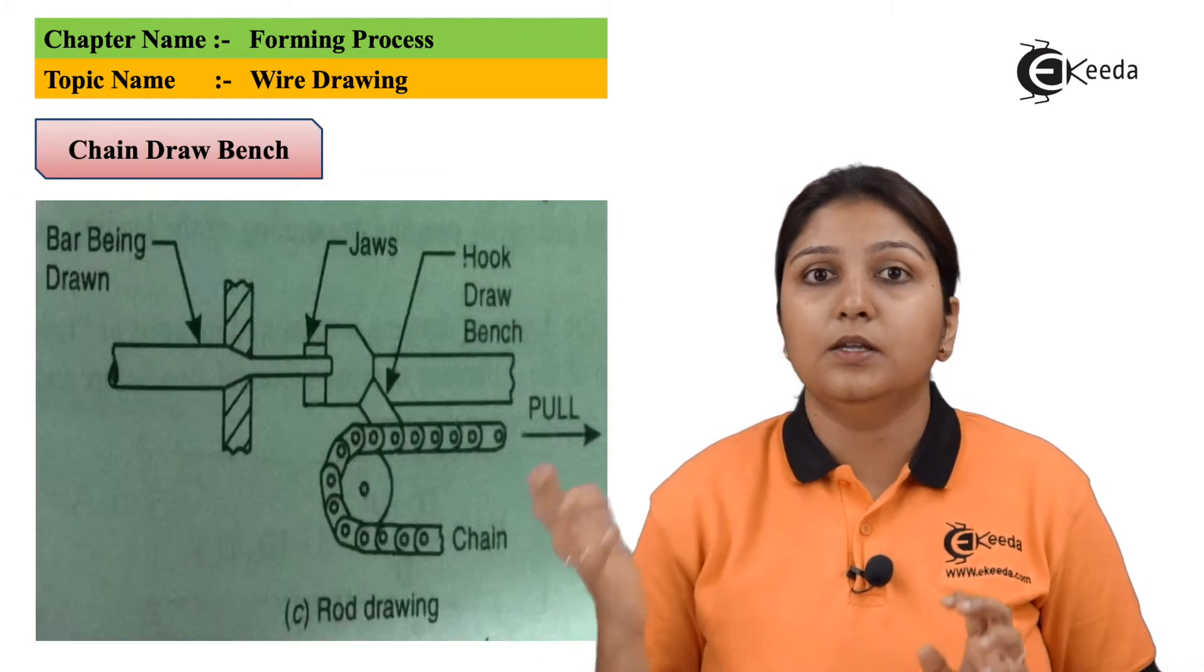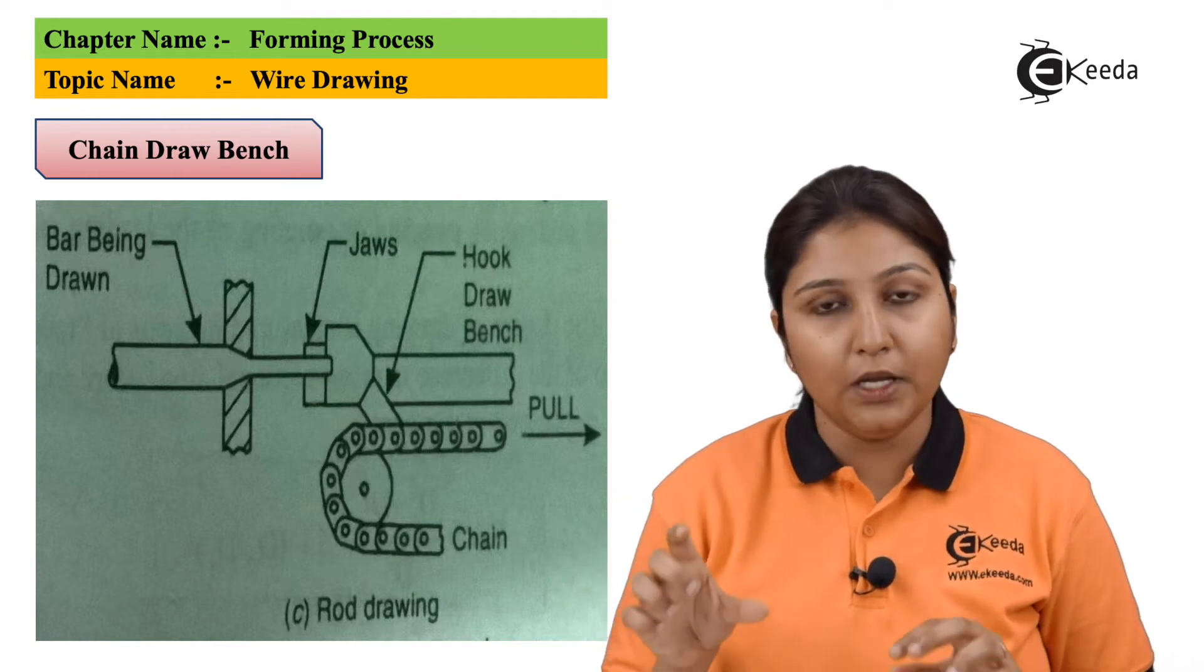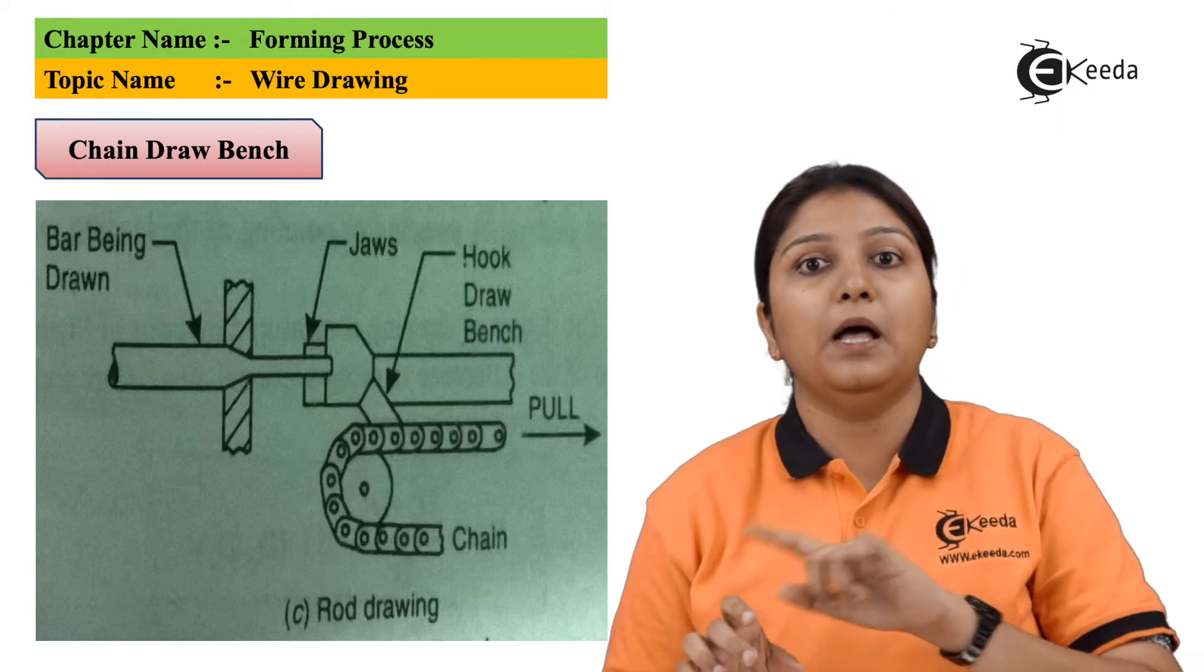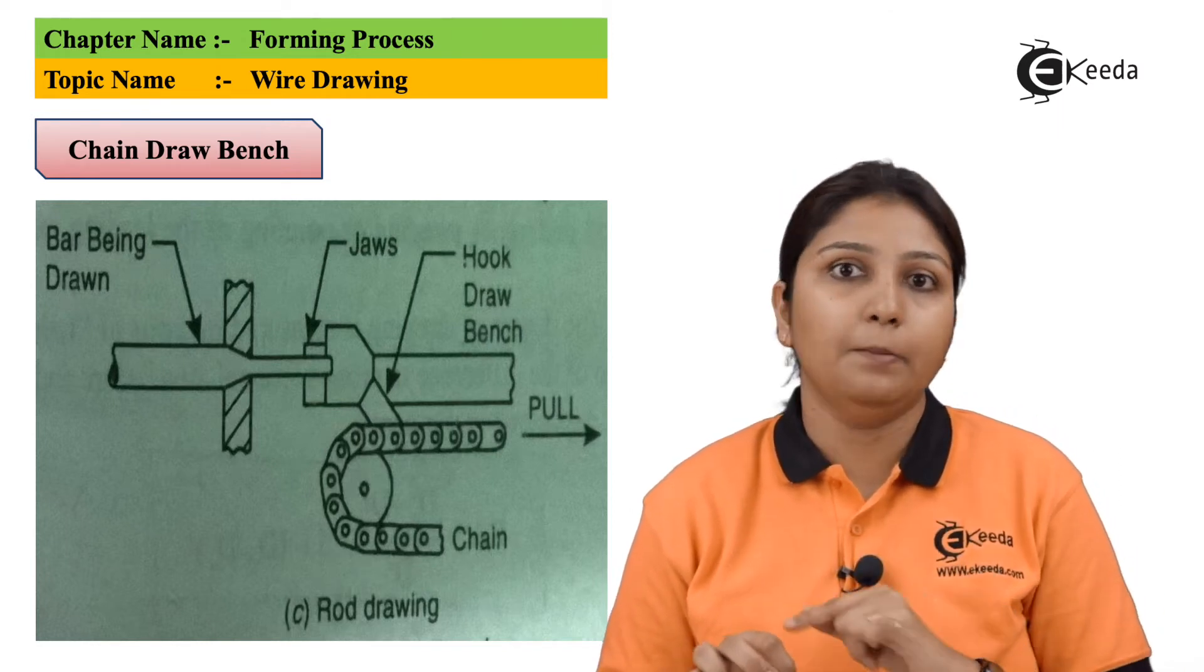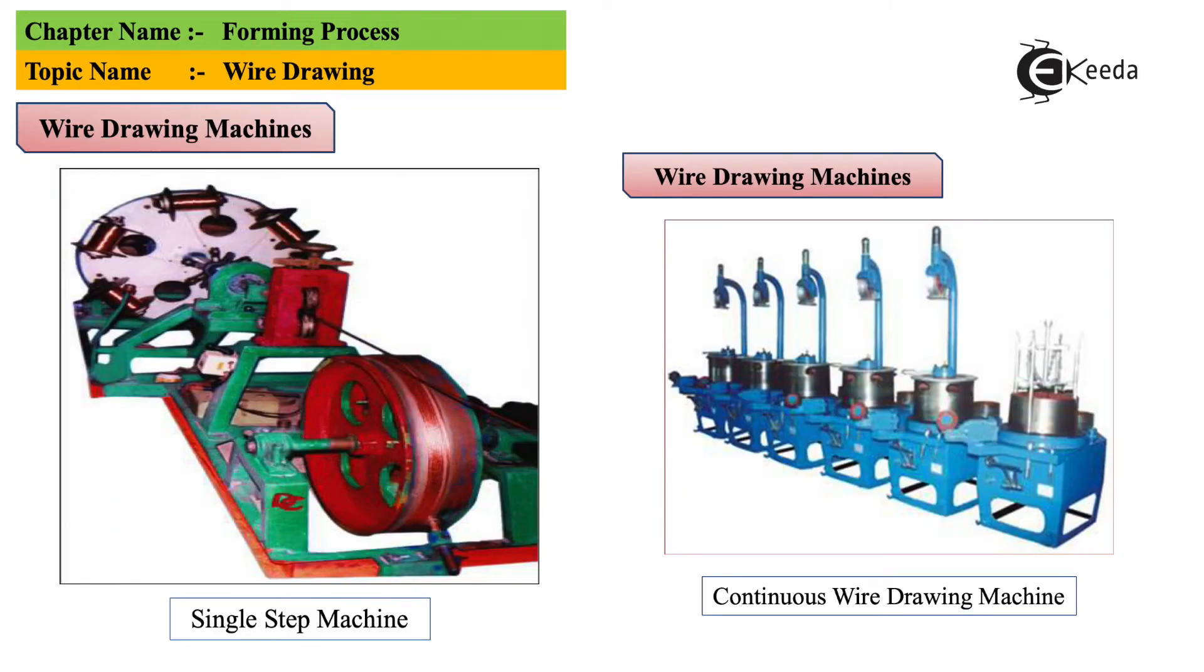In this diagram you can see there is a bar which is getting out from a small opening. There is a jaw or a hook which is holding it and again it is passing through a chain type structure - that's why the name is chain bench. So these are two diagrams of two kinds of wire drawing machines: one is single step wire drawing machine, second is continuous wire drawing machine. In single step, single wire can be made in a single stroke, and in continuous wire drawing machine your wire drawing process is continuous and large amount of coiling can be done through that wires.